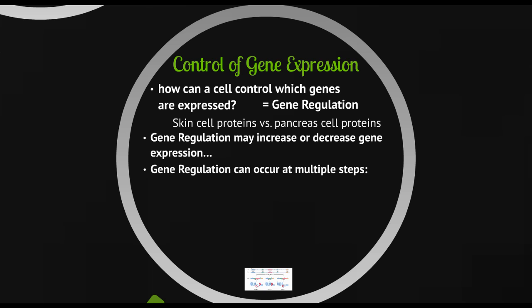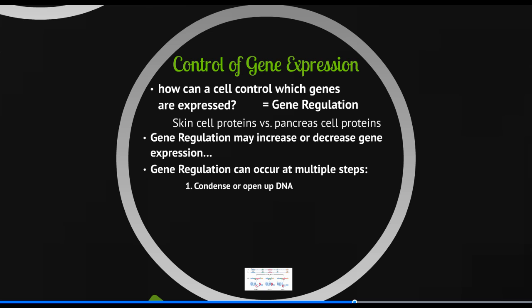Gene regulation can occur at multiple steps. The first is simply whether the DNA is tightly coiled up or open and available for RNA polymerase to find its promoters. If the DNA remains tightly coiled in a chromosome, the RNA polymerase can never attach to it, and that's one way to stop particular genes from being expressed. This is thought to be one of the main ways cell differentiation happens. In a skin cell, for example, the region of DNA that codes for insulin is tightly coiled up and never given the opportunity to be expressed there.